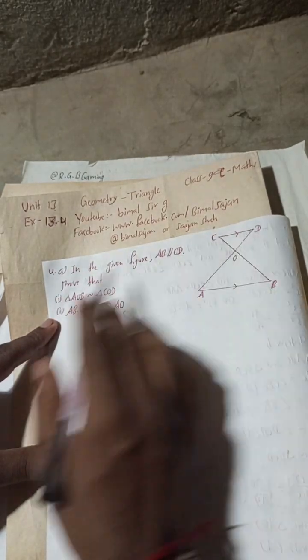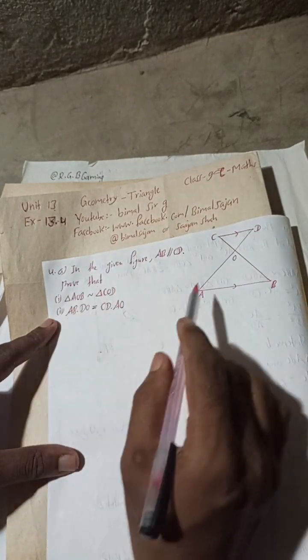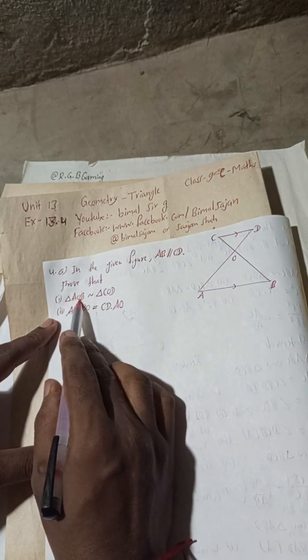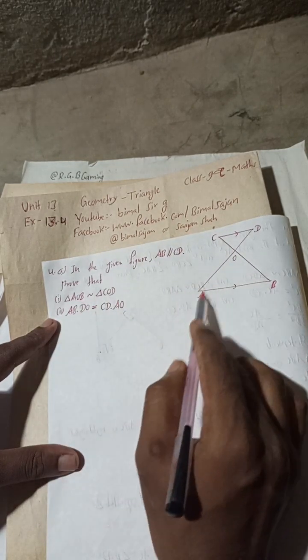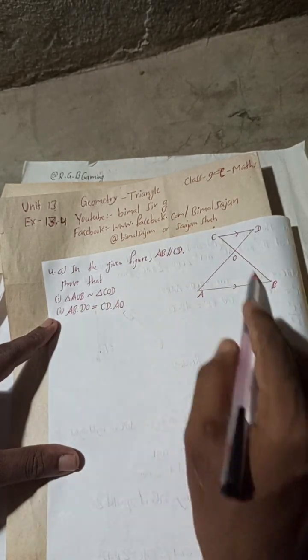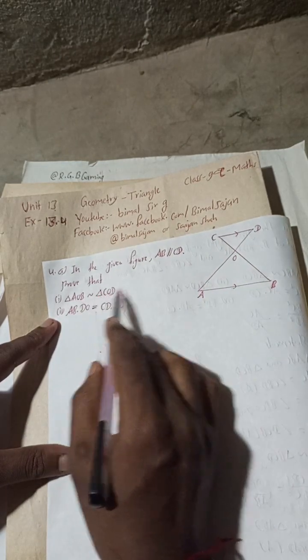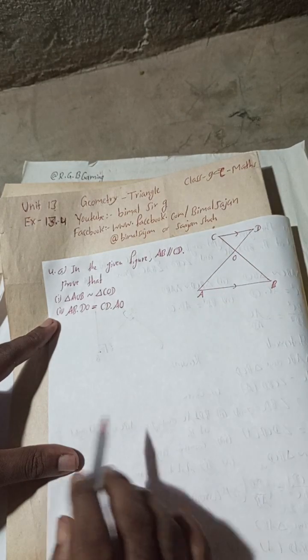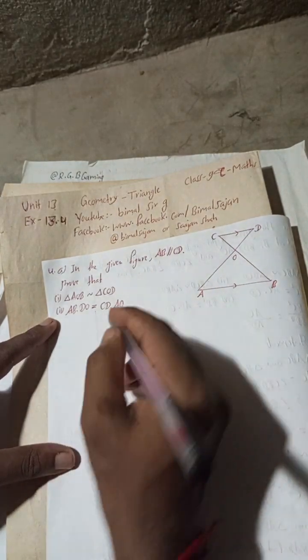Let's begin the solution of 4a. In the given figure, AB is parallel to CD. Prove that triangle AOB is similar to triangle COD.